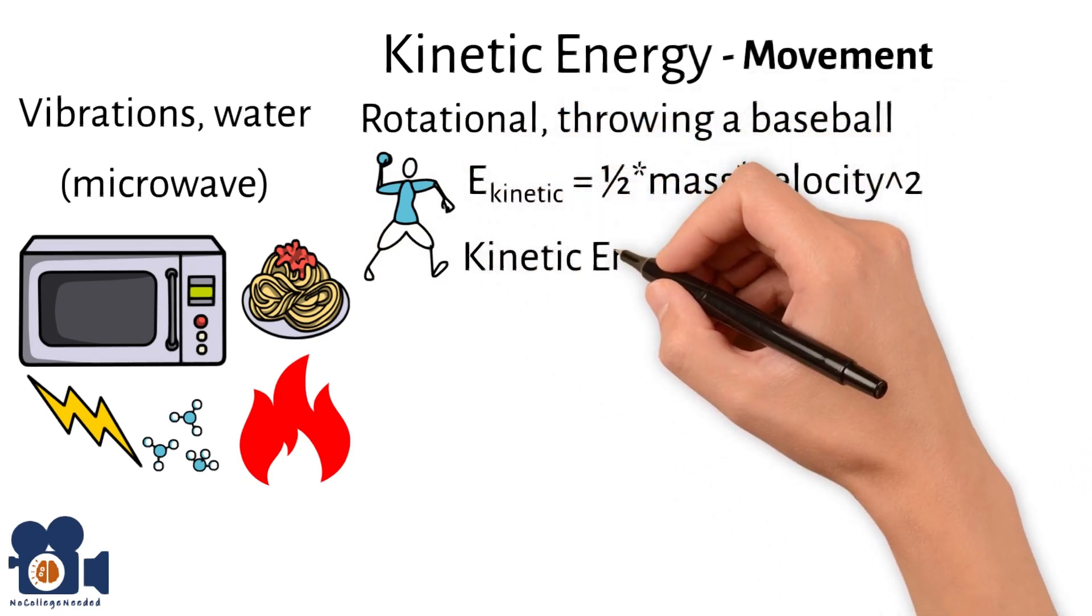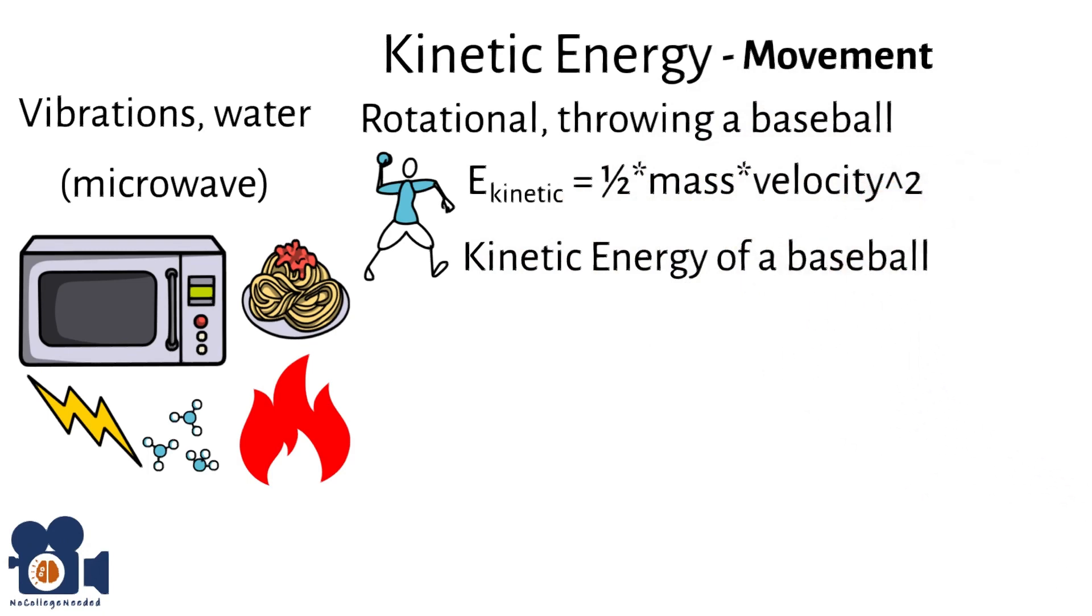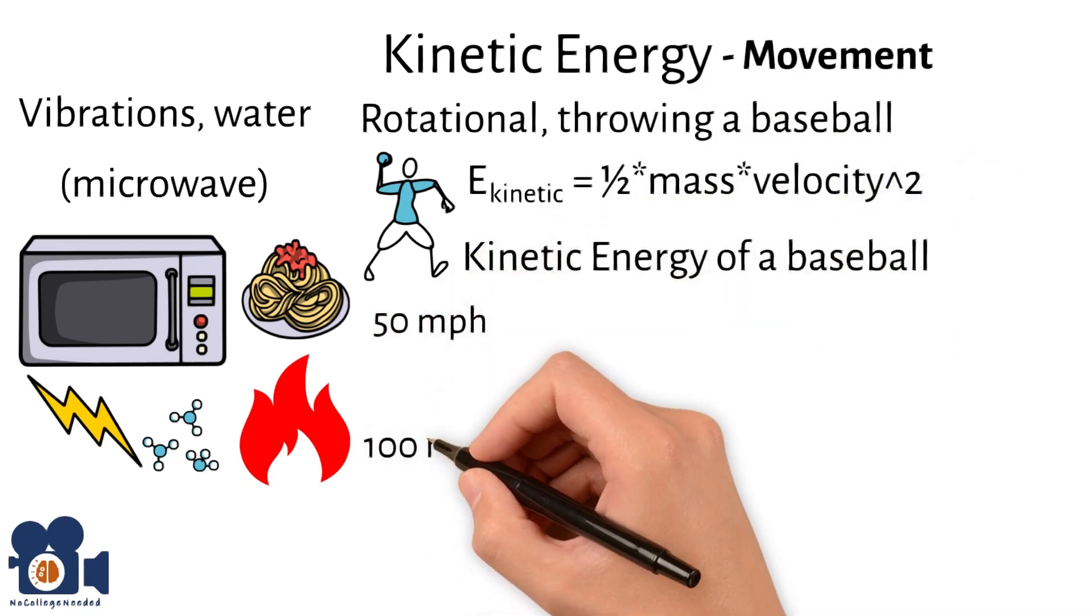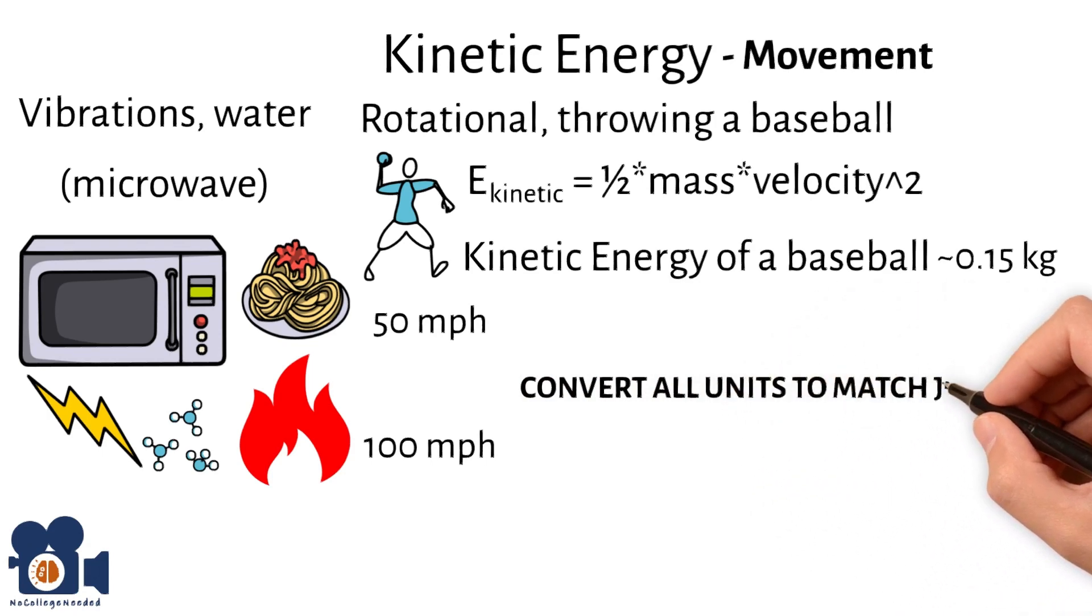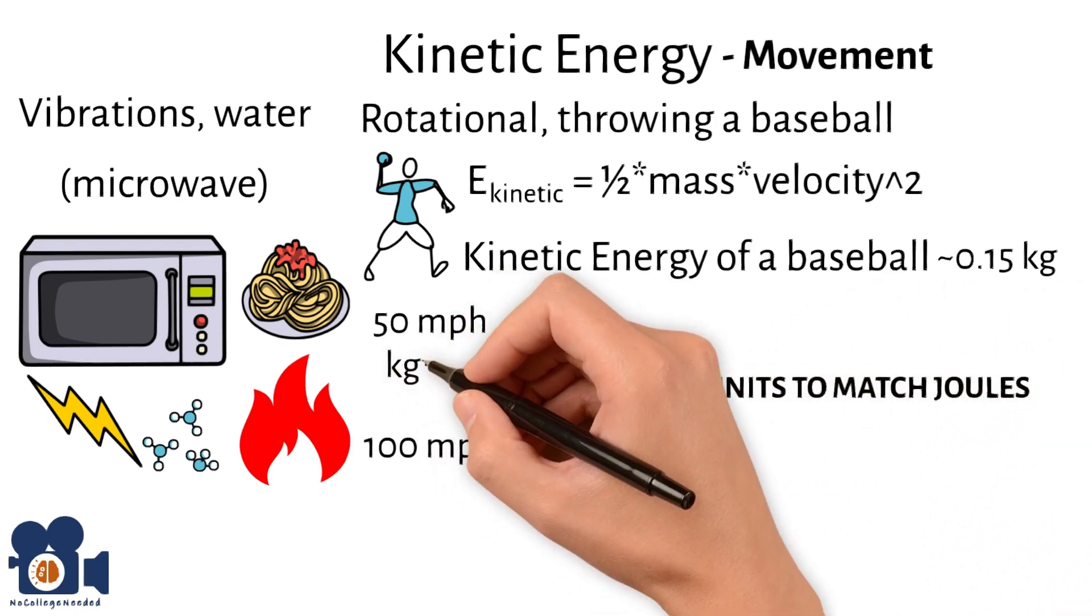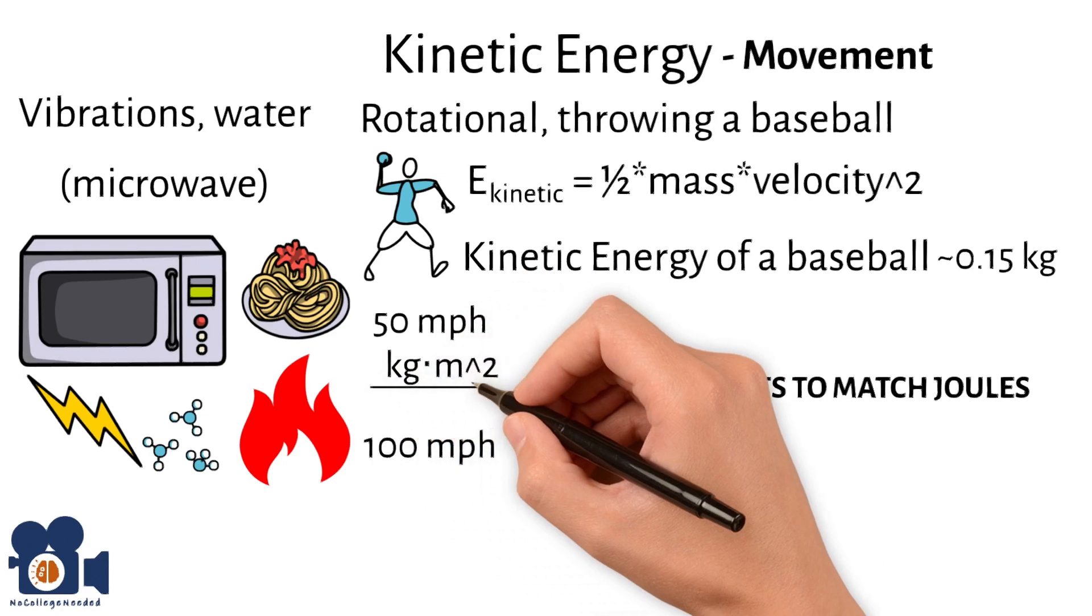For fun, let's calculate the kinetic energy of a baseball at 50 miles per hour versus 100 miles per hour. The approximate weight of a baseball is 0.15 kilograms. Remember, we must convert all the units to the units that match joules, namely kilogram times meters squared divided by seconds squared.